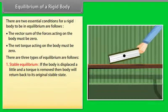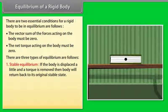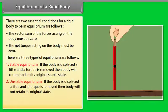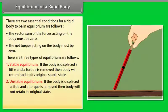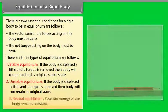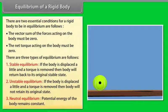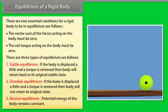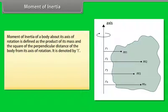For a rigid body to be in equilibrium, two conditions must be met: the vector sum of all forces acting on the body must be zero, and the net torque acting on the body must be zero. There are three types of equilibrium: (1) Stable equilibrium — if displaced and torque removed, the body returns to its original state; (2) Unstable equilibrium — the body does not return to its original state; (3) Neutral equilibrium — the potential energy of the body remains constant.